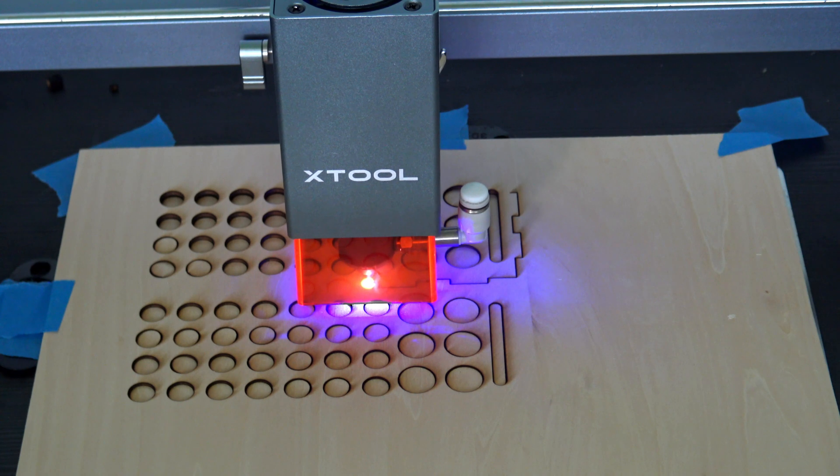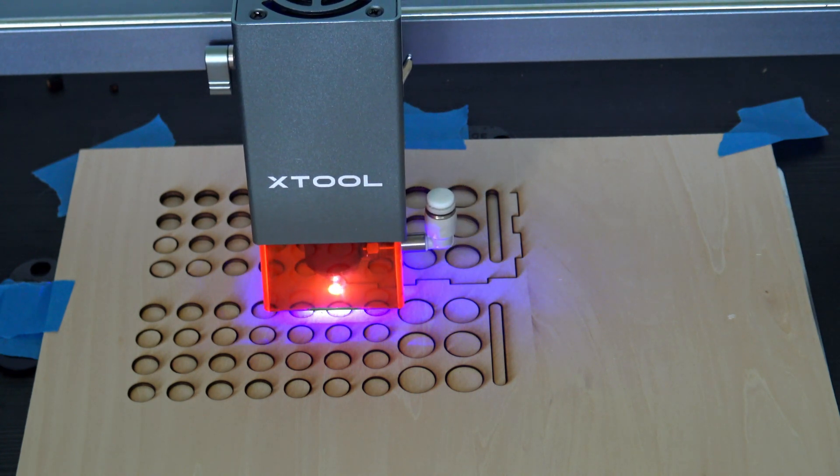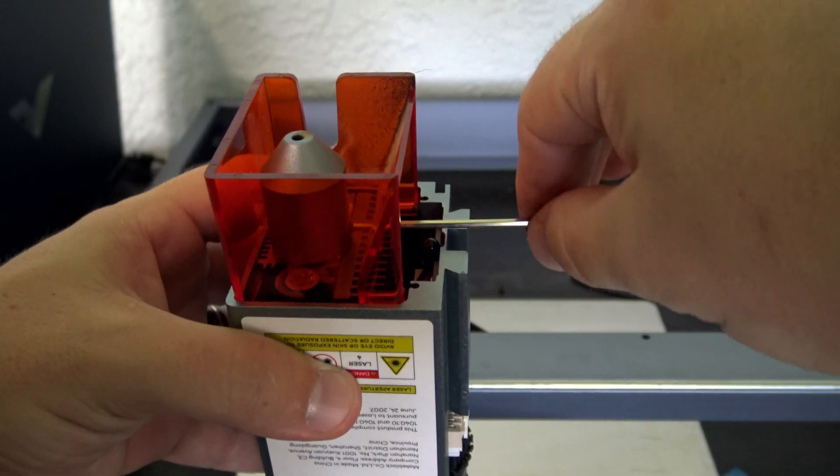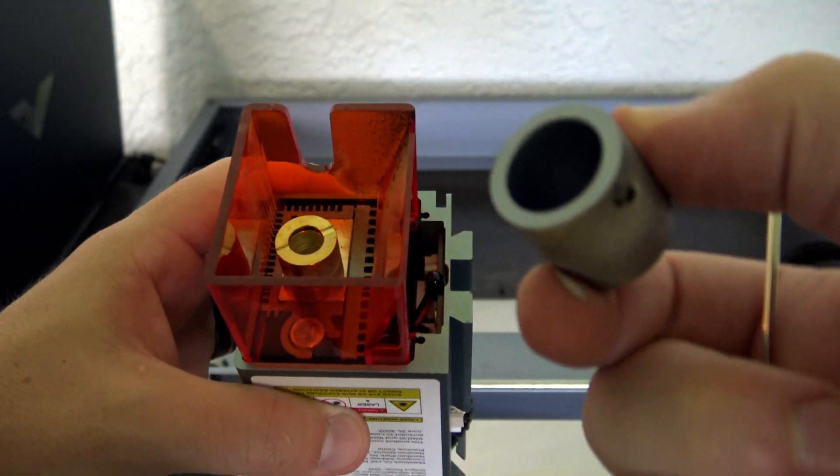At the base is a built-in protective cover. The orange plastic blocks most of the blue laser lights, but I would still recommend always wearing the protective glasses provided with the machine. Cleaning the cover and lens is simple, although you will need the provided hex wrench to remove the nozzle in order to access the lens.